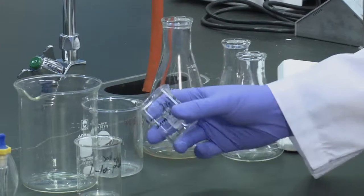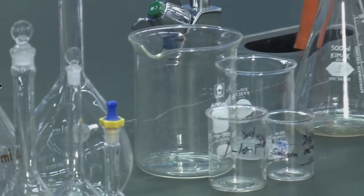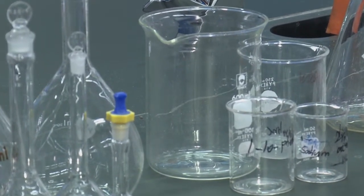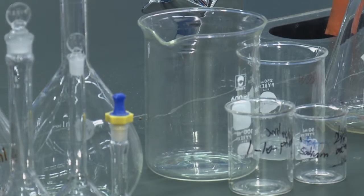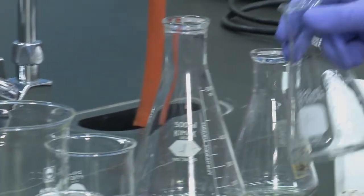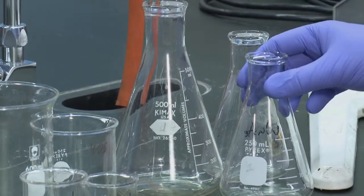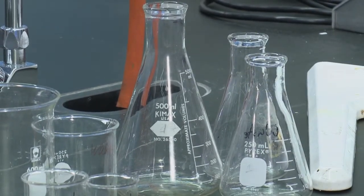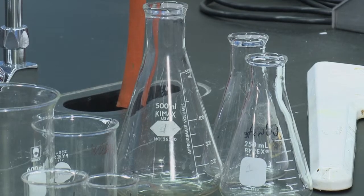The next glassware you'll use commonly are beakers. They are just for holding volumes of liquid but not for specific accurate measurements. Likewise with Erlenmeyer flasks, which are often used for titrations, they are not to be used for accurate measurements of volume.